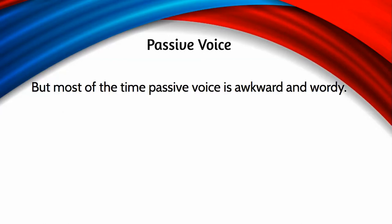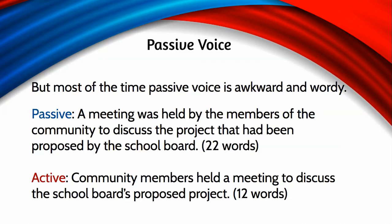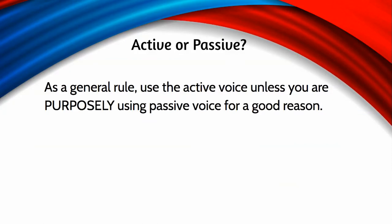Most of the time, though, don't use passive voice — it's awkward and wordy. Here's an example: 'A meeting was held by the members of the community to discuss the project that had been proposed by the school board.' Less experienced writers think this sounds sophisticated, but it's just awkward. Make it active: 'Community members held a meeting to discuss the school board's proposed project.' It's clear, direct, and goes from 22 words down to 12. As a general rule, use active voice unless you're purposely using passive for a good reason — those two P's go together: purposeful passive.